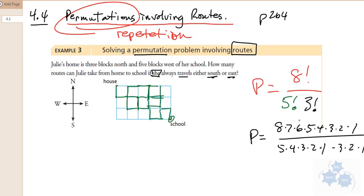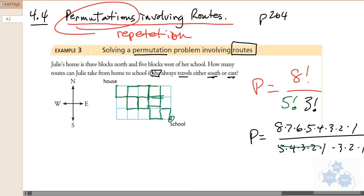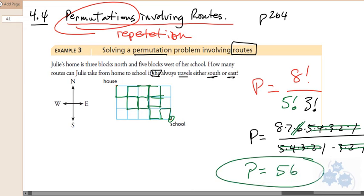So, if you notice, and again, you don't have to do this, but there's five, four, three, two, one. Three times two times one is actually six. Does that make sense? And so what's eight times seven? Fifty-six. So there's fifty-six different routes. Now, can you do that on your calculator? Of course. But I just wanted to show you that this makes a lot of sense.